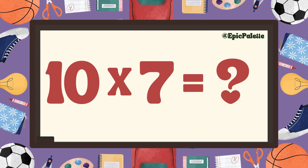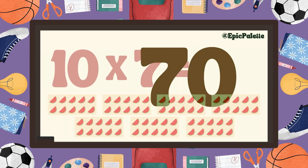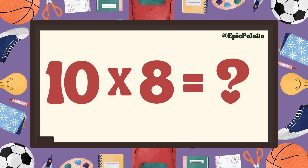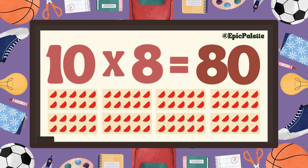Ten times seven equals... Seventy! That's right. Ten times seven equals seventy. Fantastic! You are doing great! Ten times eight equals... Eighty! That's right. Ten times eight equals eighty. Perfect!